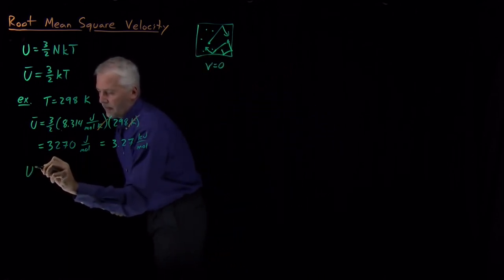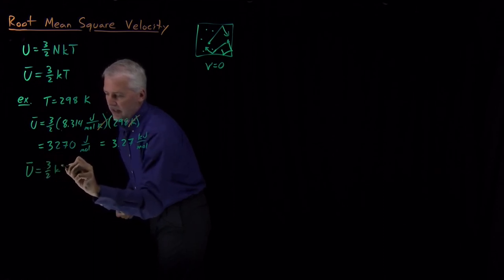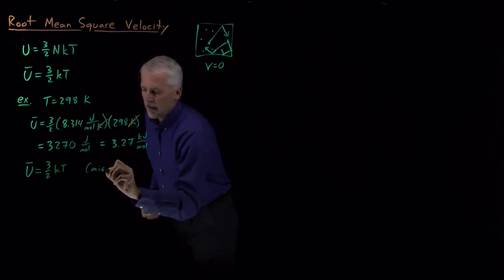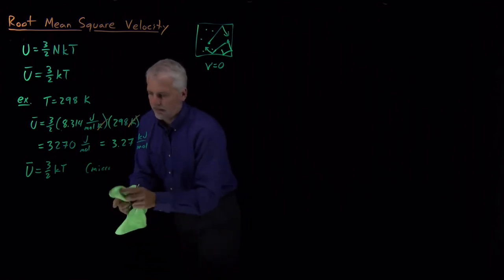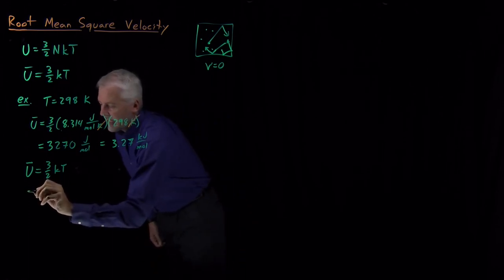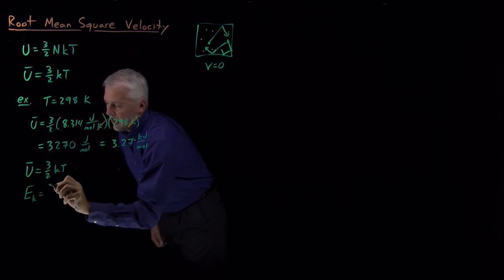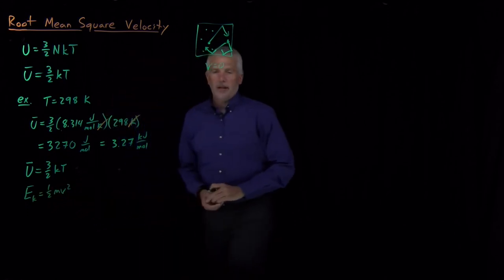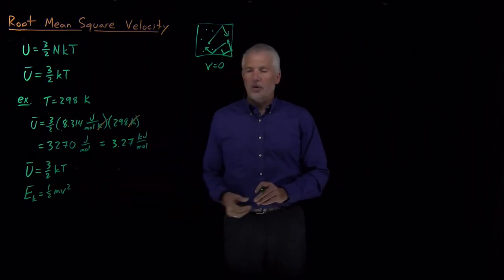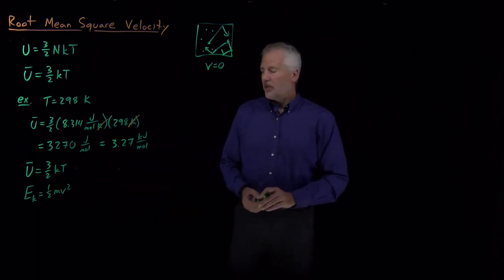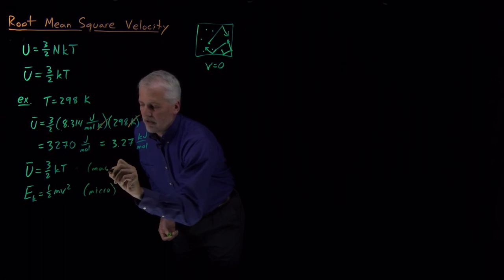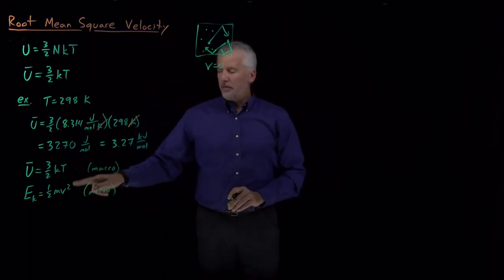We can say U equals 3/2 kT — that's the intensive energy, the energy of each individual molecule. That's a macrostate property. On the other hand, the kinetic energy, E_k, is 1/2 mv². We know something about kinetic energy: each of these molecules bouncing around has an energy of 1/2 mv² for its particular mass and velocity. So this is a microscopic property, whereas the internal energy describing the energy of the entire box of gas is a macroscopic property.